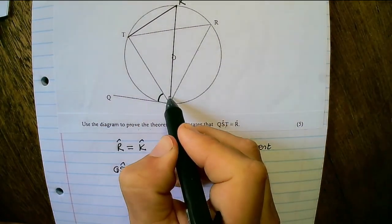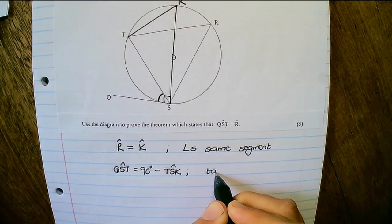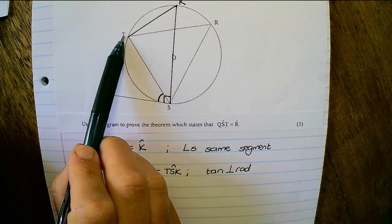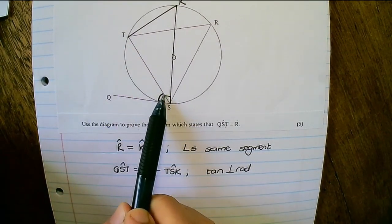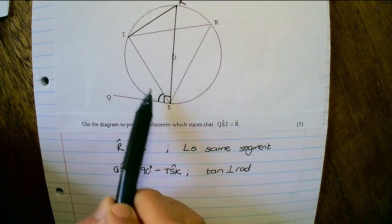And the reason is because the tangent is perpendicular to the radius. So the angle QST would be 90 degrees minus this smaller angle of TSK.